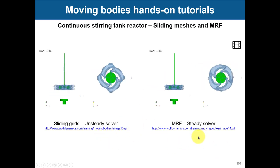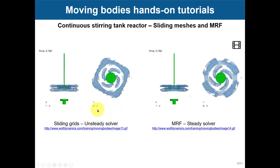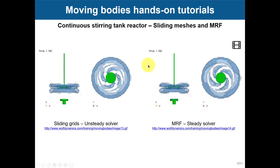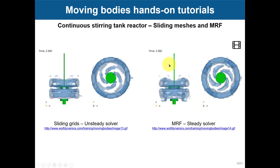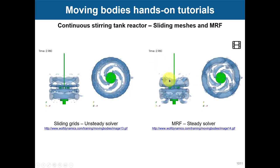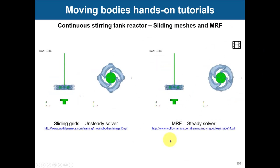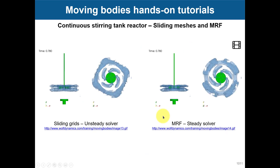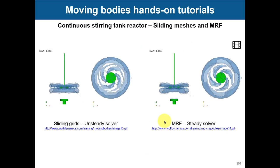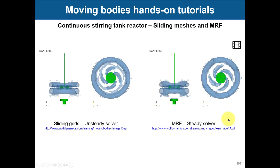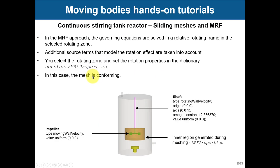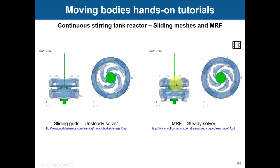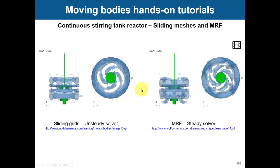With sliding meshes you need to run in unsteady mode. In this case we obtain the same solutions. In some cases this solver might not work, but for most rotating body cases MRF will give good results. You can also get a solution with MRF quickly and then use it as a starting point for an unsteady simulation. We will see the basic options for setting up these two cases.